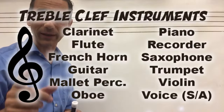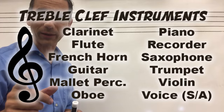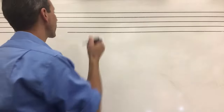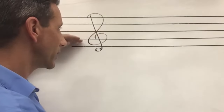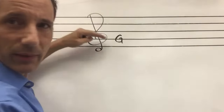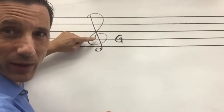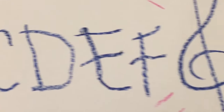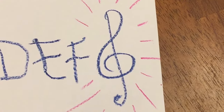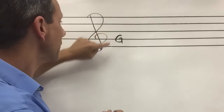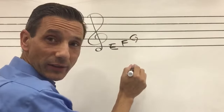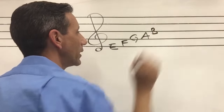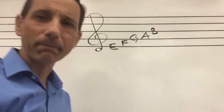The treble clef instruments are clarinet, flute, French horn, guitar, mallet percussion, oboe, piano, recorder, saxophone, trumpet, violin, and voice (soprano and alto). The treble clef tells you where G is — G is on the second line. You can see it's a fancy swirly G that swirls around that line. That makes your bottom line an E, so it goes E, F, G — there's our G — and then A, B, and so on up.